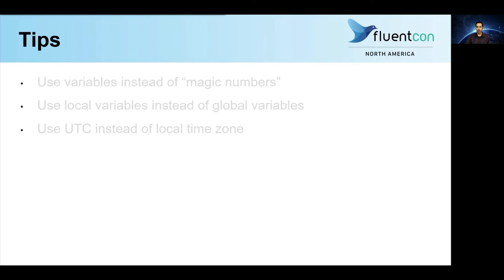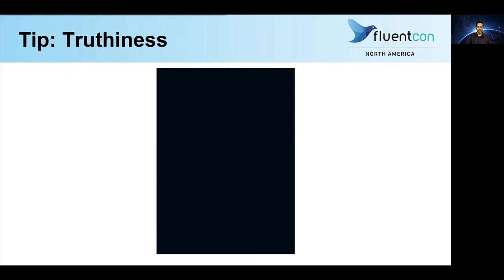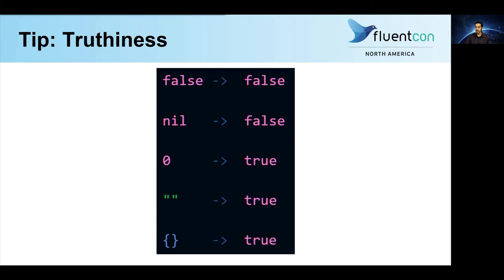Let's go over some more, starting with truthiness — in other words, whether or not a particular value evaluates as true when used in a conditional statement. Let's consider the following Lua values: the Boolean value false, nil (a reserved word in Lua used to indicate the absence of a meaningful value), zero, an empty string, and an empty table. If you're used to other languages like Python, you might expect all these values to evaluate as false. But in fact, in Lua, only the first two values — false and nil — evaluate as false. Everything else evaluates as true. So, for example, if you're checking whether a table is valid before you make use of it, make sure you're clear on whether or not you want your program to consider an empty table valid, since that will affect what conditional check you choose.